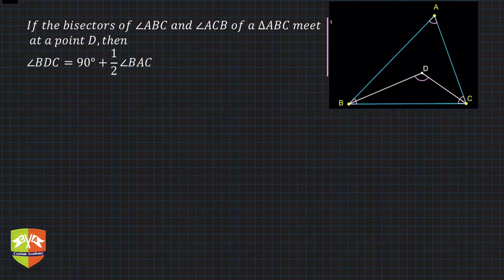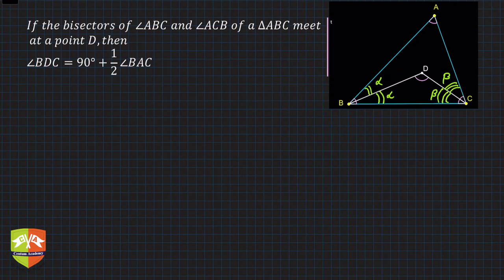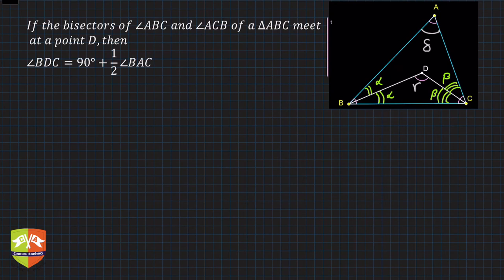We saw the validation in GeoGebra in the previous part. Now let's understand what this means. BD is the angle bisector of angle B and CD is the angle bisector of angle C. If angle B is split into two angles each of measure α, and angle C is split into two angles each of measure β — that is the meaning of angle bisectors. Let angle BDC be γ and the remaining angle in triangle BDC be δ.